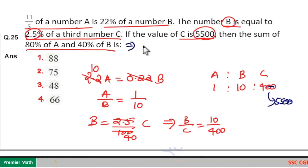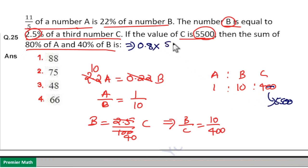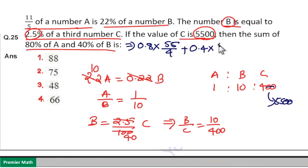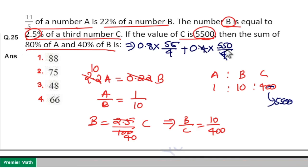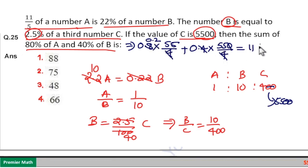80 percentage of A means 0.8 into 1 part. A is equal to 1 part, so 1 part is 55 by 4. Plus 40 percentage of B: 0.4 into B. B is equal to 10 part; 10 part is 550 by 4. Now 4 cancels — 4 goes 0.2 times into 0.8, so 55 into 0.2 is equal to 11. And the remaining gives 55. So 55 plus 11 is equal to 66.